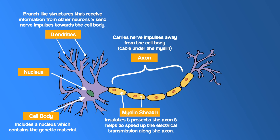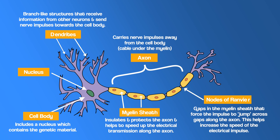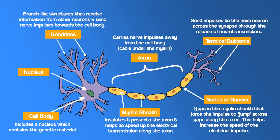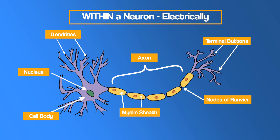The myelin sheath insulates and protects the axon and helps to speed up electrical transmission along it. The nodes of Ranvier are gaps in the myelin sheath that force the impulse to jump across them, further increasing the speed of the electrical impulse. Terminal buttons are at the end of the axon and send impulses to the next neuron across the synapse — the gap between one neuron and the next. The terminal buttons contain tiny sacs of chemicals called neurotransmitters.